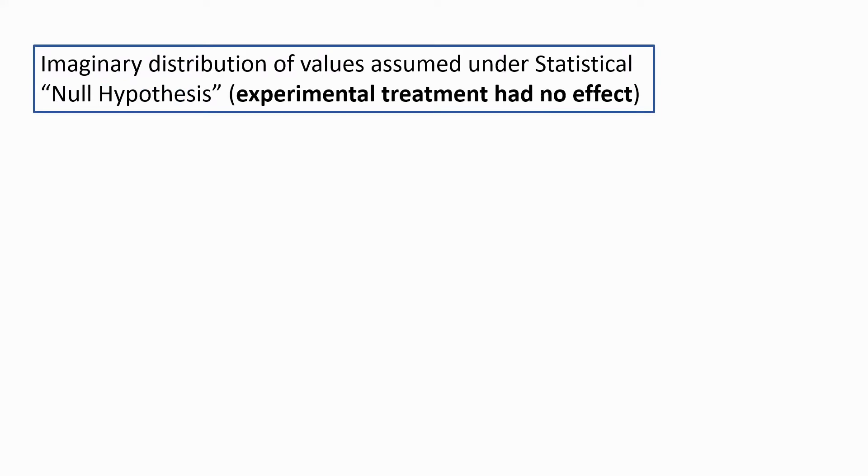In a little bit more detail, the imaginary distribution of values assumed under a statistical null hypothesis essentially is the assumption that the experimental treatment had no effect. So it might have a distribution of values, let's say, people's body weights, something like this bell-shaped curve with a mean of mu 1.